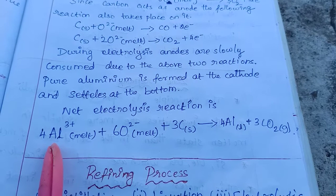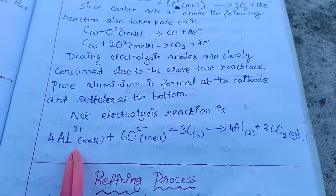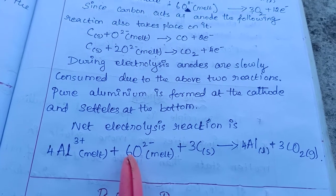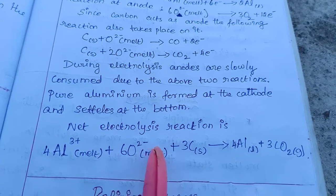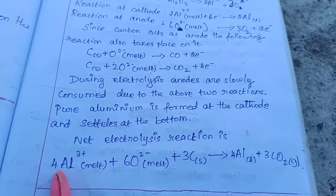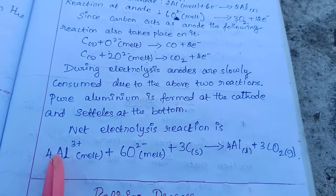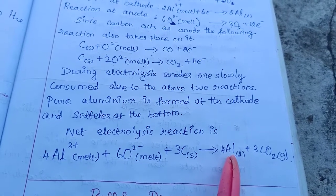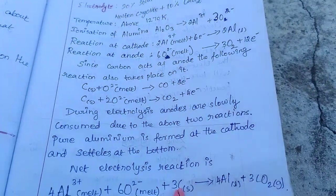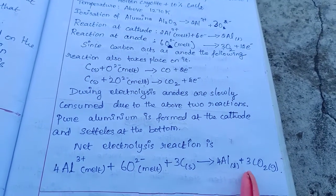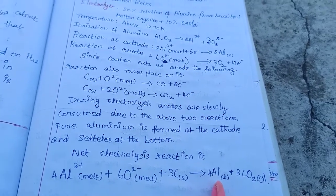The net electrolysis reaction: 4Al³⁺ require 12 electrons, and 6O²⁻ release 12 electrons. The overall reaction is 4Al³⁺ + 6O²⁻ + 3C → 4Al + 3CO₂. The carbon blocks react with oxygen to form carbon dioxide gas, and you will get pure aluminum through the Hall-Herold process.